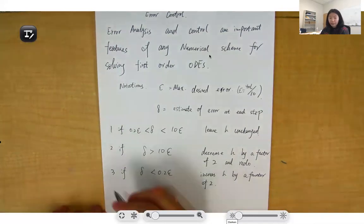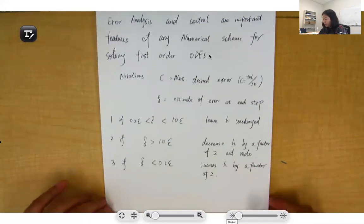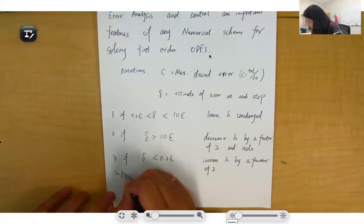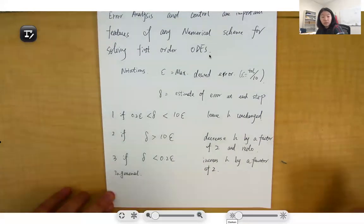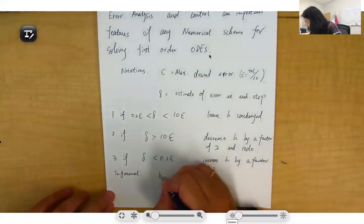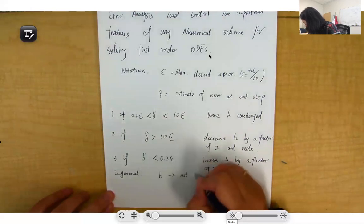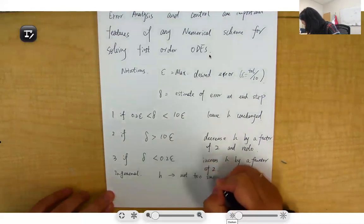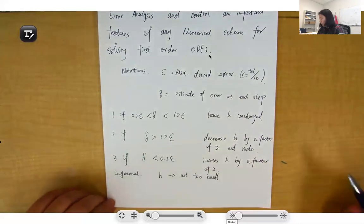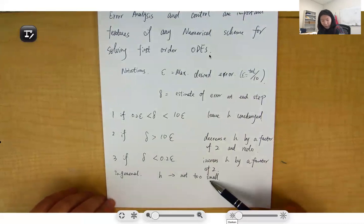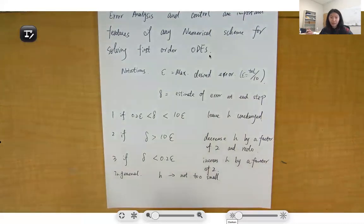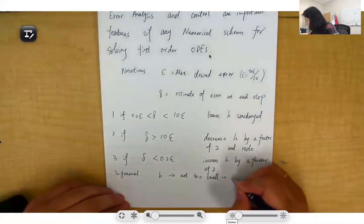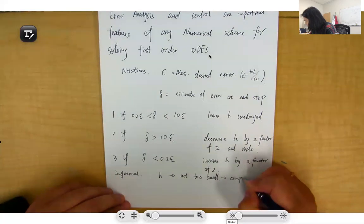In general, we don't want h too small or too big. If h is too small, that will lead to significant computational expense, meaning the total steps you need to scan is huge. We don't want that—computation is expensive.